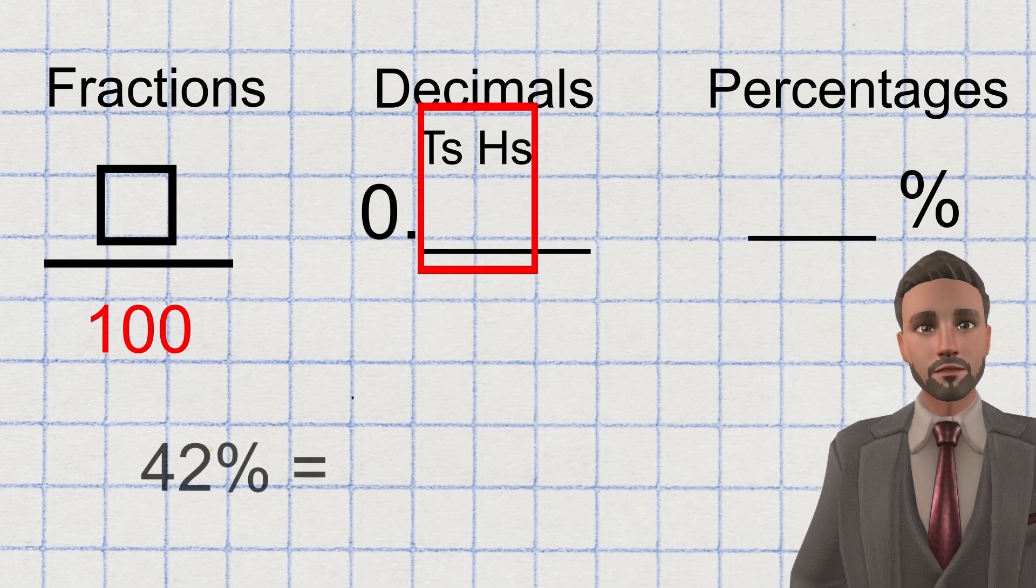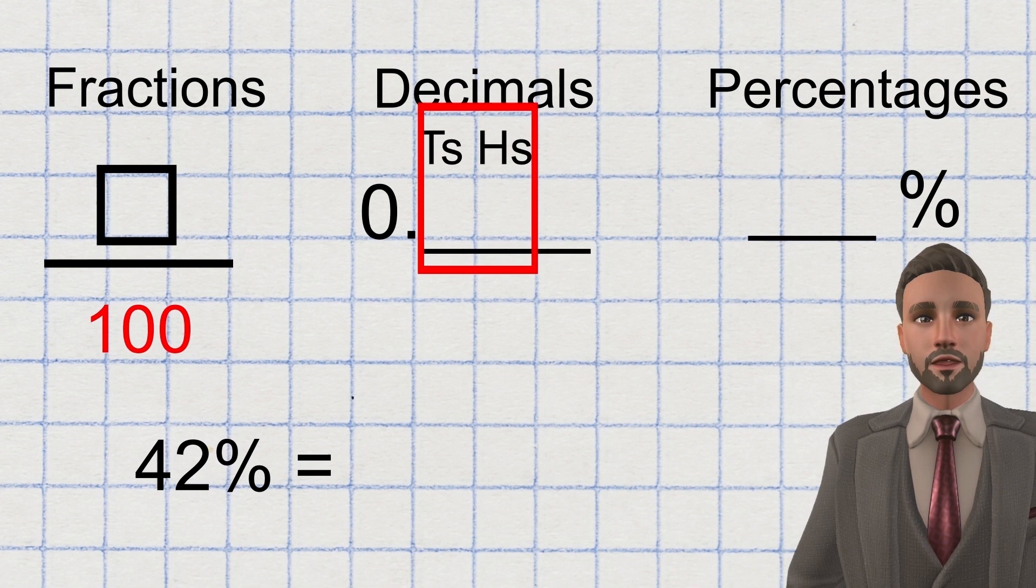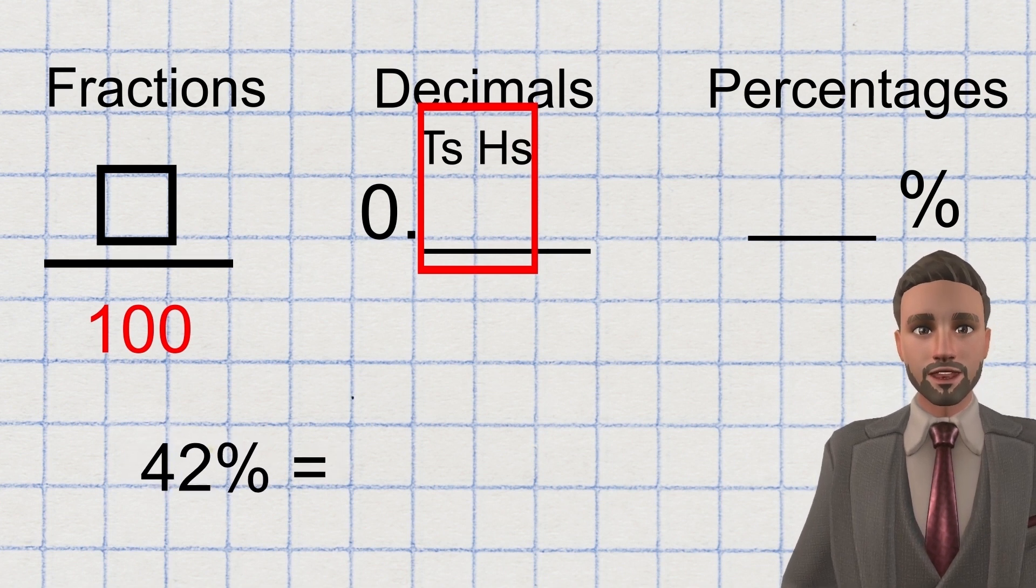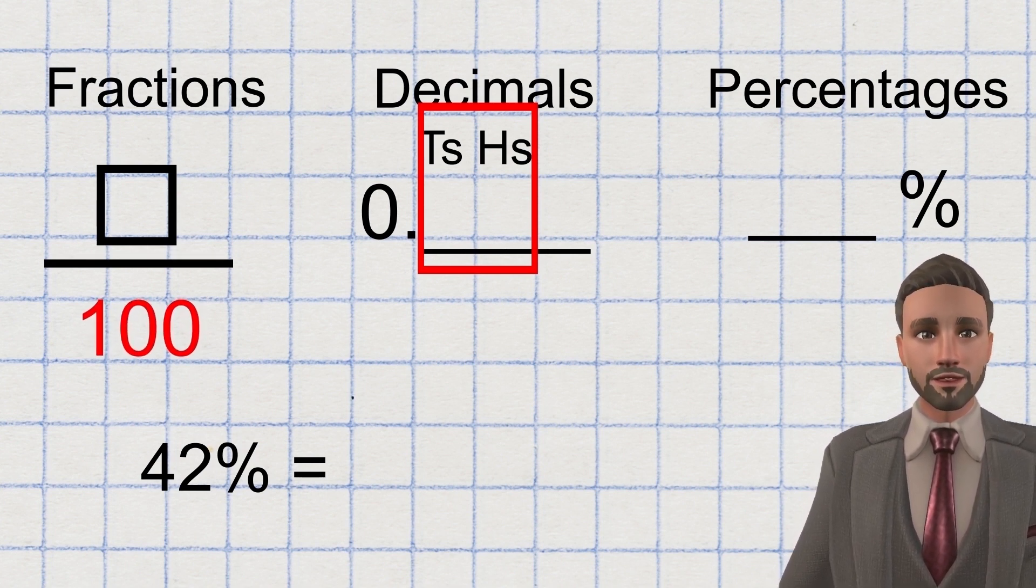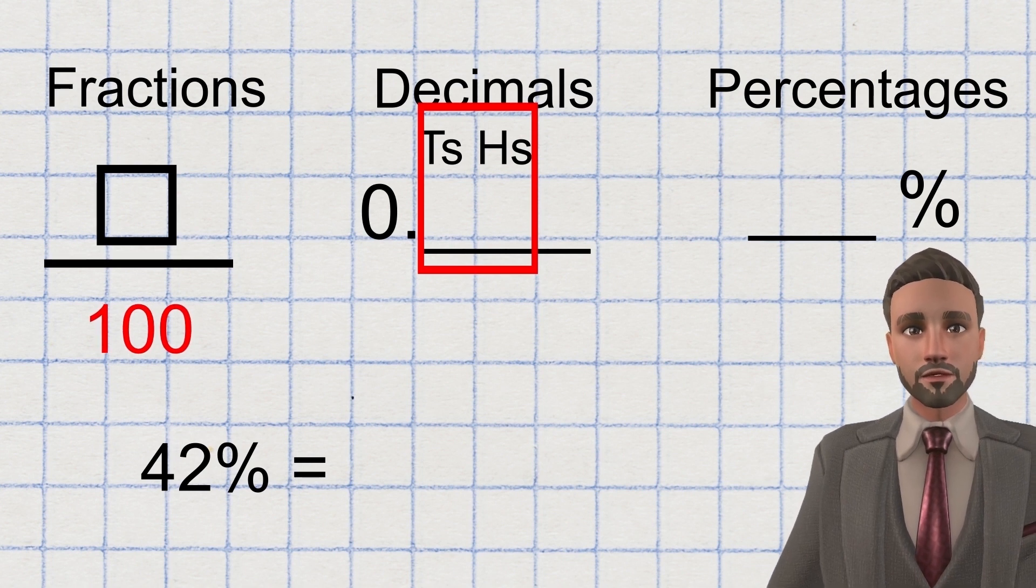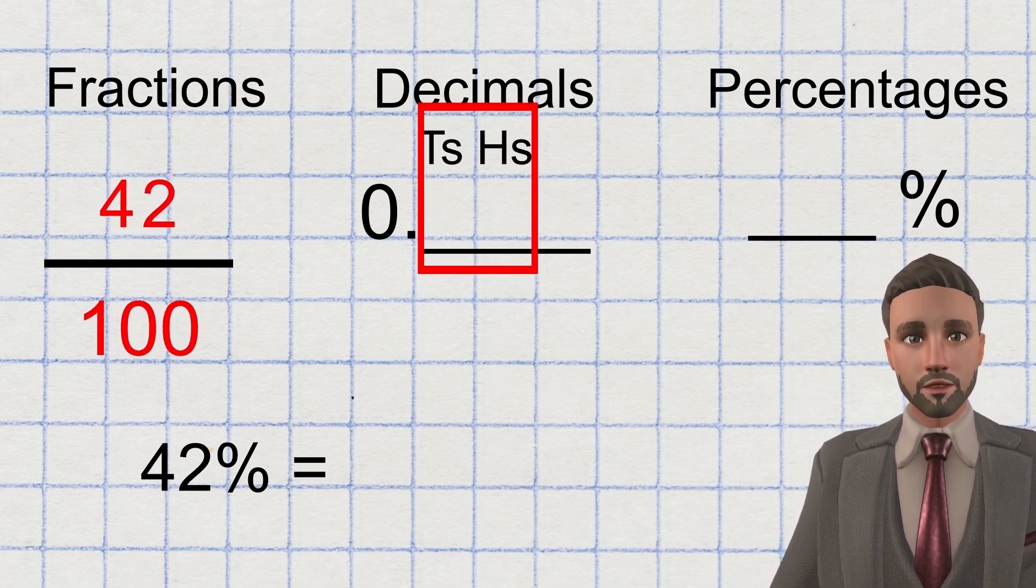Let's take a look at the question 42% as a fraction or a decimal. 42% as we covered means 42 per 100. As a fraction, the per 100 is the 100 parts it's broken into at the bottom. The 42 represents the amount of parts we have and that would go at the top. So the fraction would also read 42 per 100.